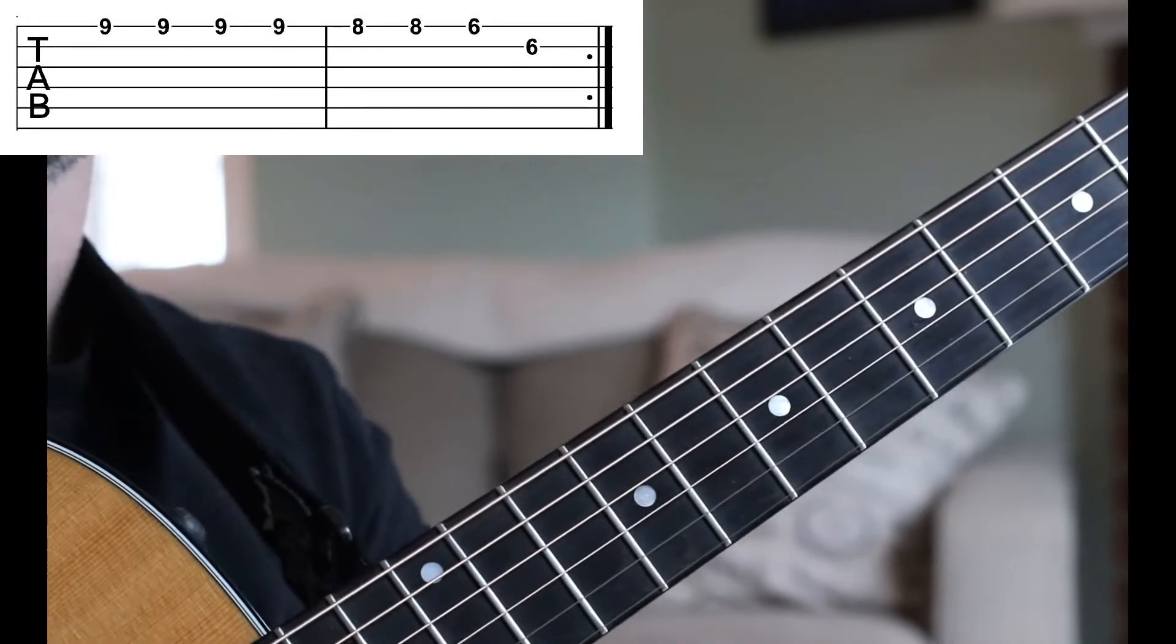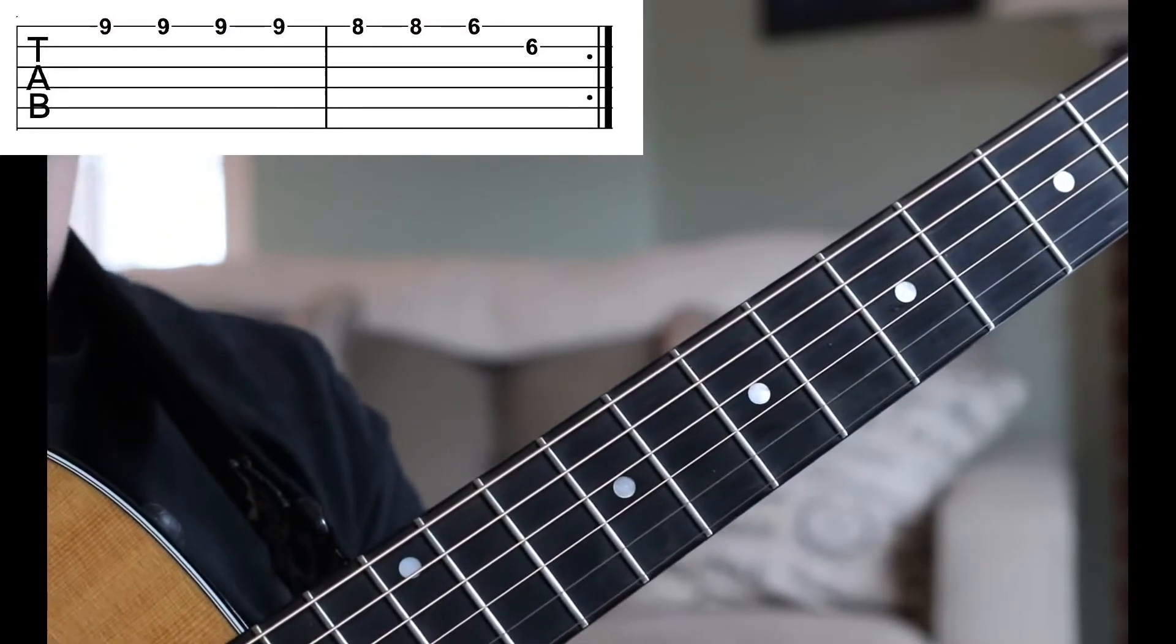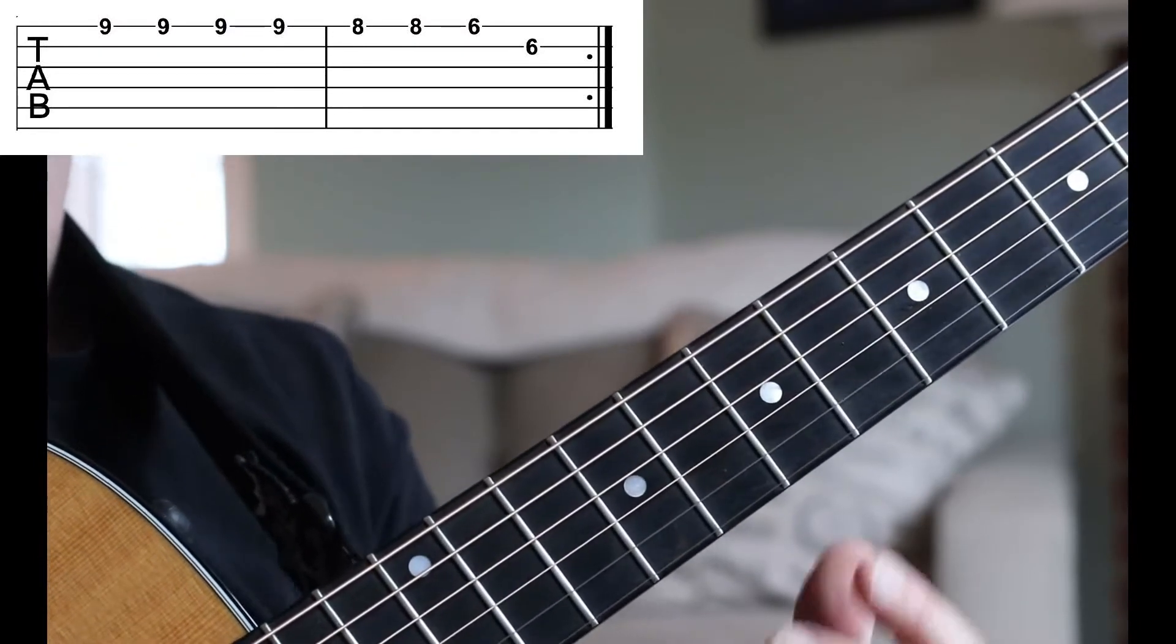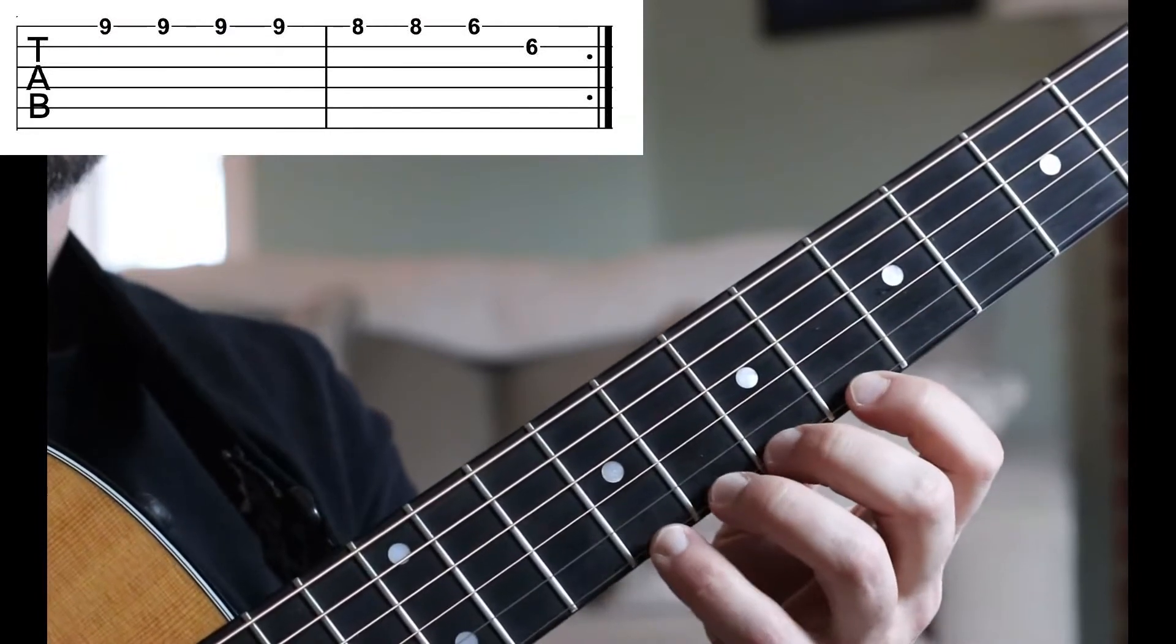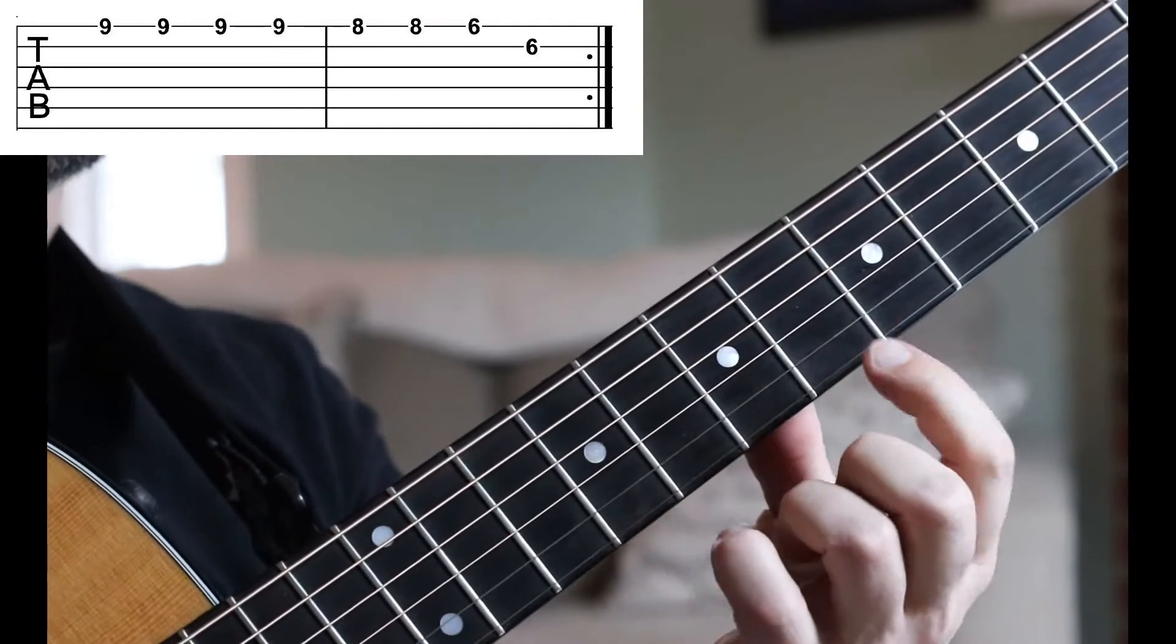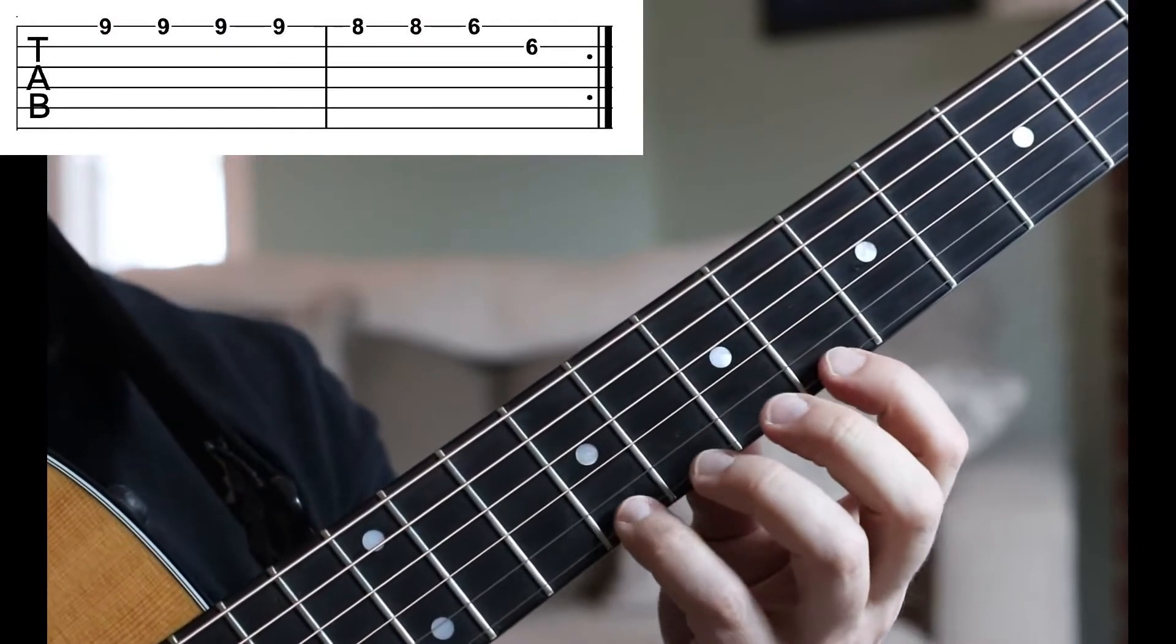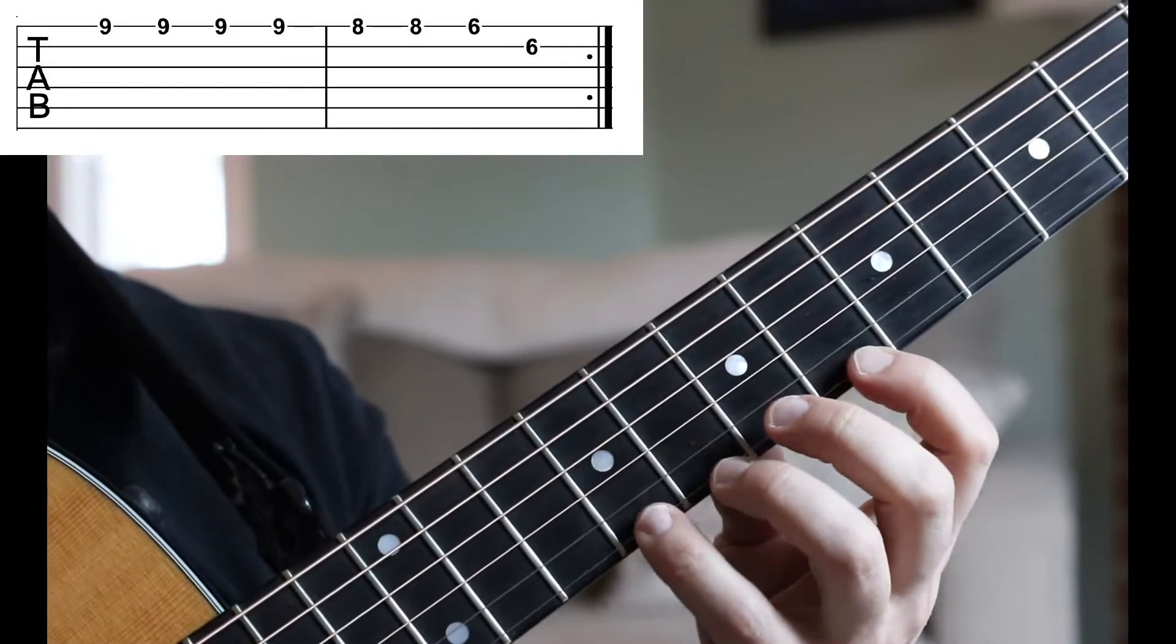So as you can see, we have 9s, 8s, and 6s. An important thing to note with this tab is that you're going to want to center your hand in the best spot possible. In this case, your first finger should be over the 6th fret and your pinky should be over the 9th. So that way you don't have to move too much.